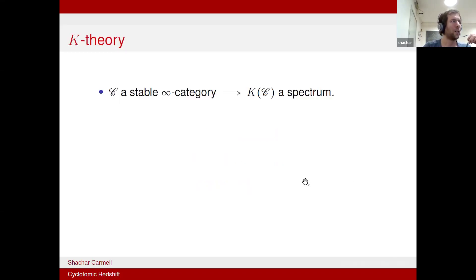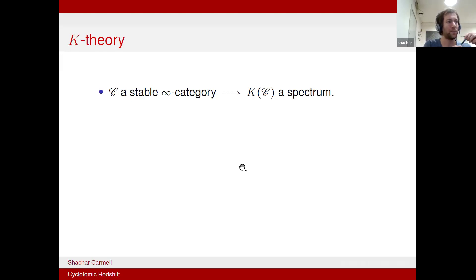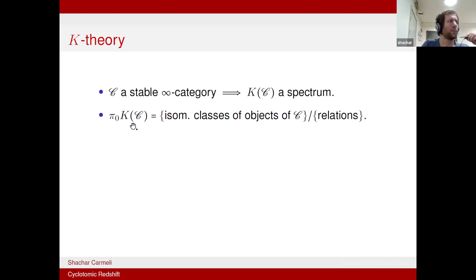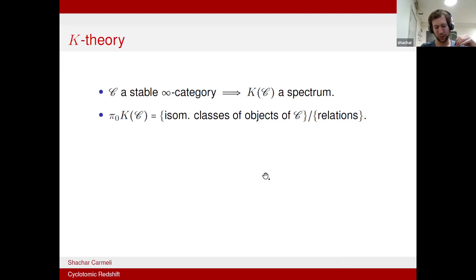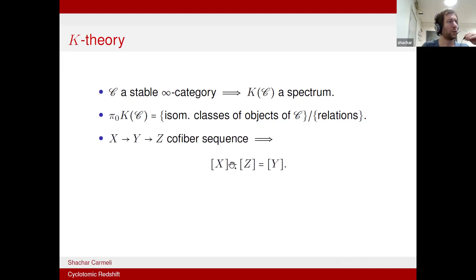Let me first quickly recall what K-theory is. If C is a stable infinity category, we can associate to it a spectrum called the K-theory spectrum. The precise flavor doesn't matter much because after chromatic localization, they all identify. Roughly speaking, π₀ of the K-theory spectrum of C classifies isomorphism classes of objects, quotiented by relations encoding how an object is glued from two others — so if we have a cofiber sequence, we impose that the middle is the sum of the two sides.